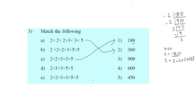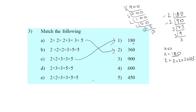So 900: we divide by 3 — 3 into 300 is 900. Then 3 again: 3 into 100 is 300. Then 2: 2 into 50 is 100. Then 2 again: 2 into 25 is 50. Then 5 table. So 900 = 3 squared into 2 squared into 5 squared — that is, 3 two times, 2 two times, 5 two times.